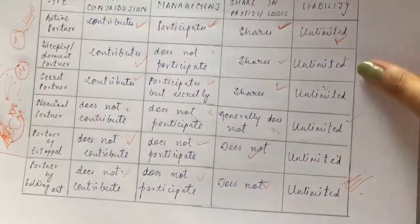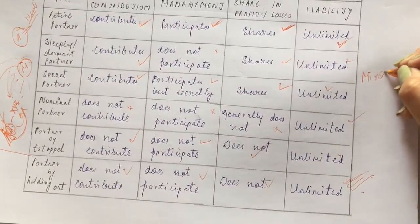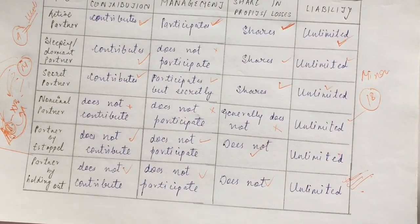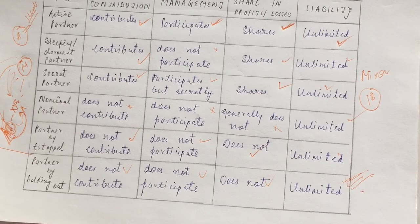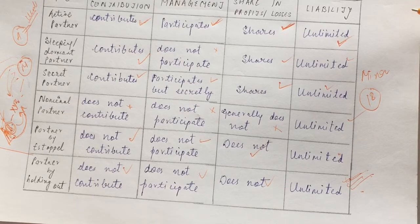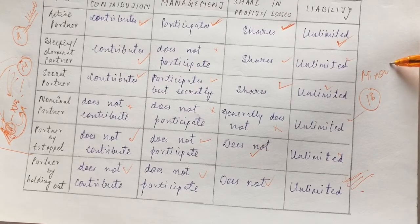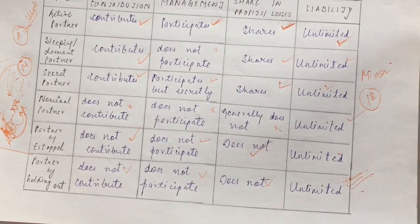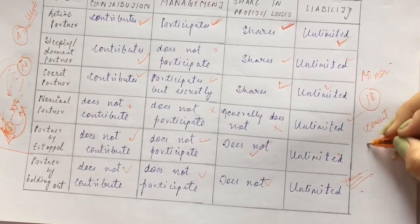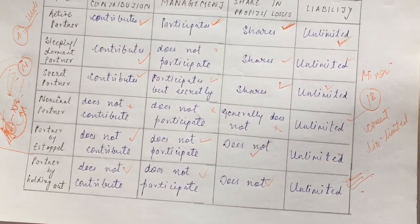Another type is minor as a partner. A minor is someone who is less than 18 years old. Under the Indian Contract Act, a person under 18 cannot enter a valid contract — their agreement would be invalid. However, in partnership, a minor can be admitted but only to the benefits of the firm, and only with the mutual consent of all existing partners. The minor's liability is limited.